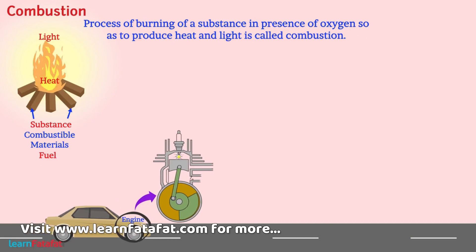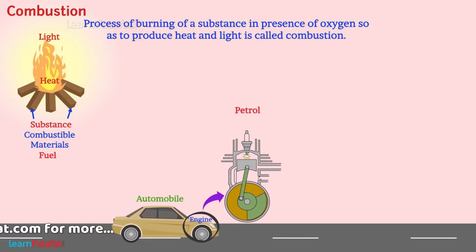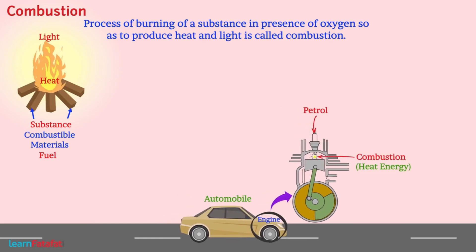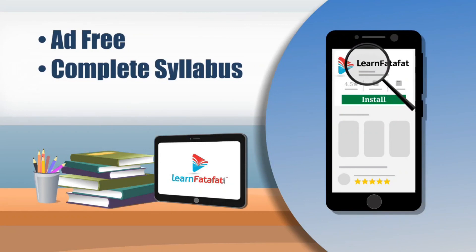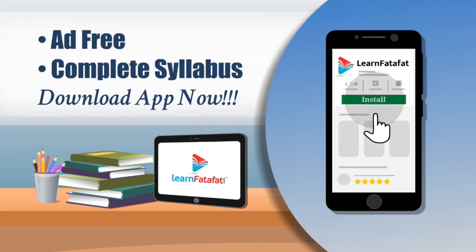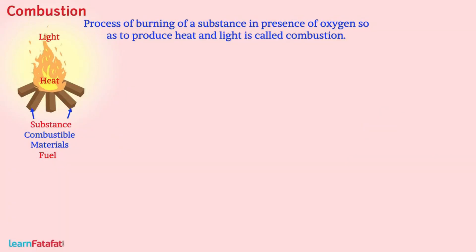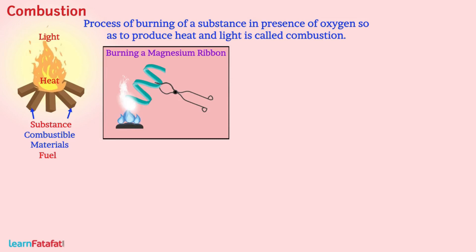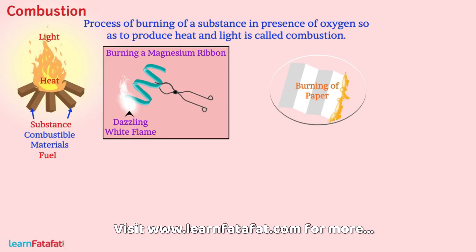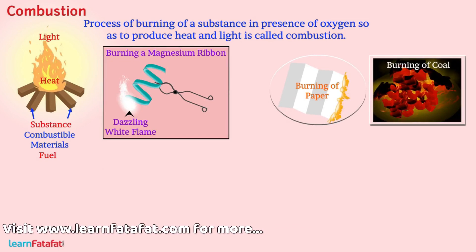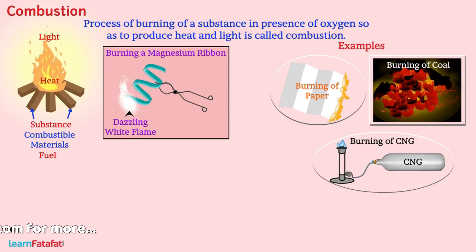For example, in automobiles, petrol undergoes combustion producing heat energy that drives the vehicle. You're familiar with the experiment of burning of magnesium ribbon. What do you observe? Magnesium ribbon, if heated in air, burns with a dazzling white flame. Burning of paper, burning of coal, and burning of CNG are all examples of combustion.